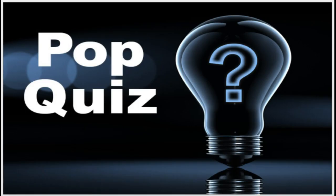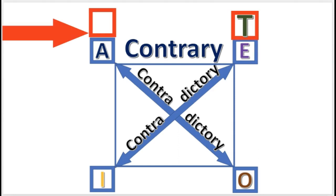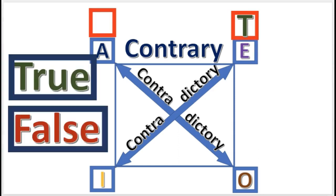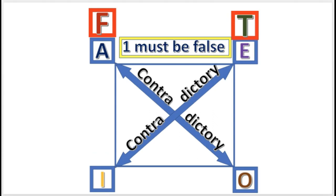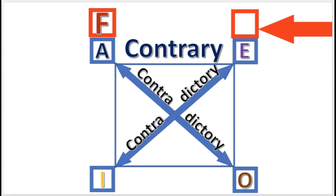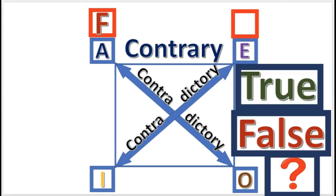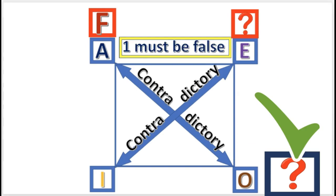Pop quiz: If the E proposition is true, what is the A proposition? The answer is: False. At least one must be false. Next practice problem: If A is false, what is the truth value of E? The answer is: Undetermined. Only one must be false; the other can be either.